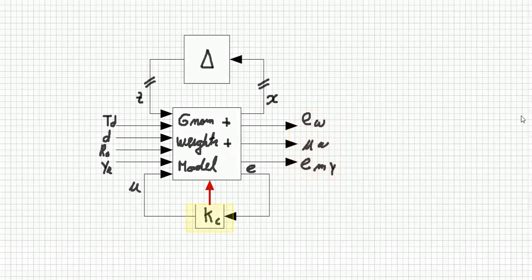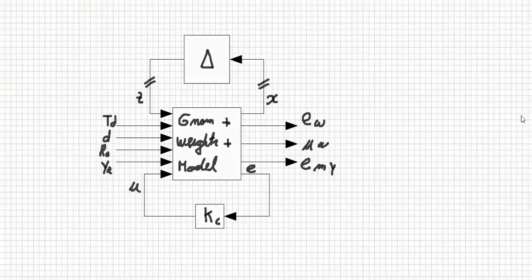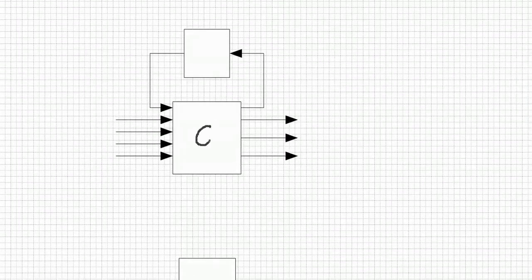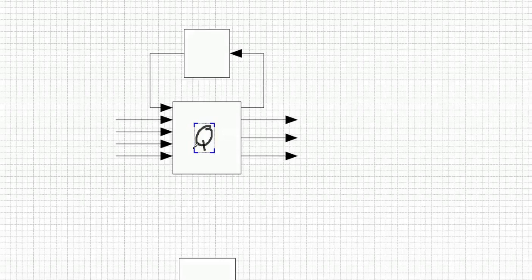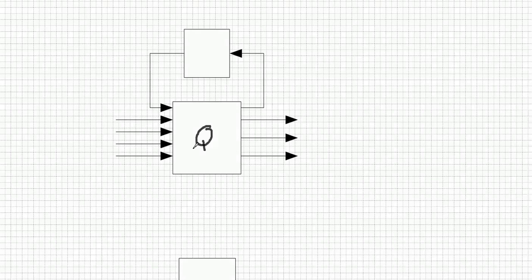Next, we are going to include KC, the controller, inside the middle box, in order to simplify even more our block diagram. Notice that U is not an input anymore because now it's a dependent variable. It depends on the error E and the controller KC. The representation here has only two blocks. The main transfer function is Q. That includes everything. It includes the weights, the nominal plant, the controller, and the model.